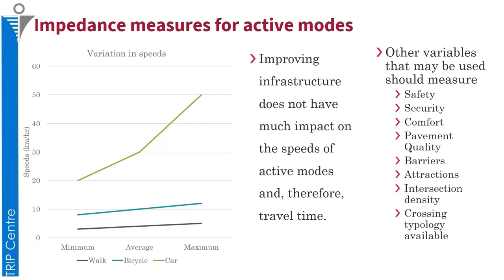When considering impedance in a mode choice model, we need to consider other variables, which can include measuring safety, security, comfort level, pavement quality, barriers, number of attractions available, intersection density, crossing typology, etc. This list of variables is non-exhaustive; one may add variables based on the context and the demands observed through surveys.